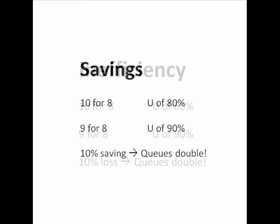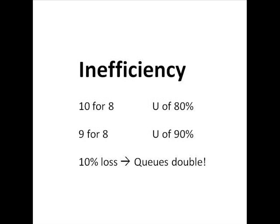Similarly, if you had an inefficiency situation — suppose one of your people isn't very well trained, or the equipment's getting a bit worn out, or you bring in an extra system where people have to fill in one more form and they become 10% less efficient — that means instead of coping with 10 people in an hour, they can only cope with 9, and you've got 8 arriving. The queues are going to go from 4 to 9. So just because somebody is 10% slower, the queues will double.